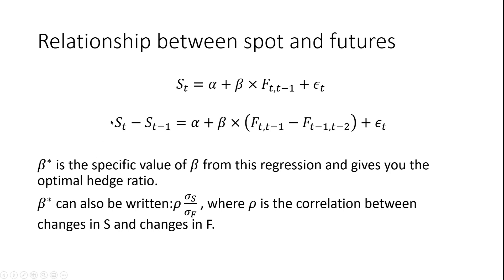We have one model which uses the levels of the spot price and the futures price — this is a one period hedge. If we found the optimal hedge ratio using beta in this regression, we would most probably have problems with heteroscedasticity and autocorrelation in the errors.